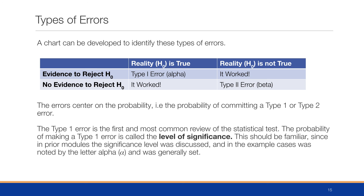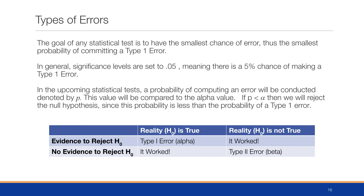The probability of making a Type 1 error is called the level of significance, denoted by the letter alpha, and is generally set to 0.05 — meaning there is a 5% chance of making a Type 1 error. In upcoming statistical tests, a probability of computing an error will be conducted, denoted by what we call the p-value — not to be confused with proportions from the previous module. We compare this p-value to alpha: if the p-value is less than alpha, we reject the null hypothesis, since the probability of that error is less than the probability of alpha, which represents a Type 1 error.